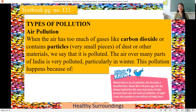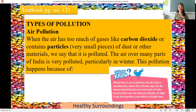The next topic is types of pollution. We saw that pollution means making the air, water, and soil dirty. There are different types of pollution. The first is air pollution. When the air has too much of gases like carbon dioxide and contains particles — very small pieces of dust and other materials — we say that it is polluted.